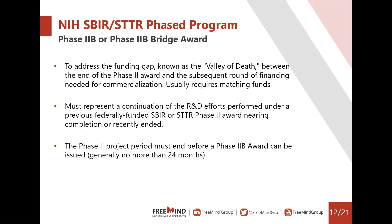There is also a second phase two award, whereby agencies may award a second phase two to continue a phase two project. The purpose is to support the next stage of development for federally funded SBIR phase two projects and to address the famous funding gap — known as the 'valley of death' — between the end of the SBIR phase two award and the subsequent round of financing needed for commercialization. You may know this as a phase 2B award, competing renewal, or bridge award. Examples include offerings from NCI, NINDS, NHLBI, and many more institutes within the NIH.